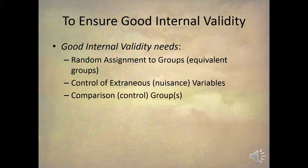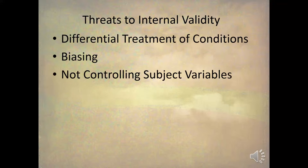The minute you lose one of these things, you start to enter a gray area where there may be threats to internal validity. So let's take a look at the three categories of threats to internal validity: differential treatment of conditions, biasing, and not controlling subject variables.